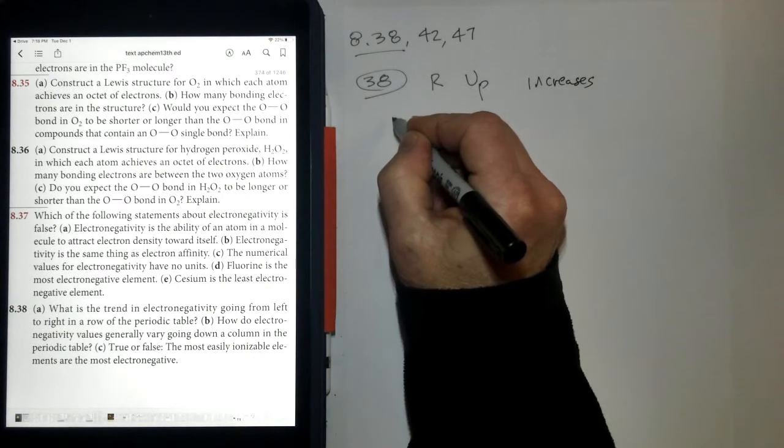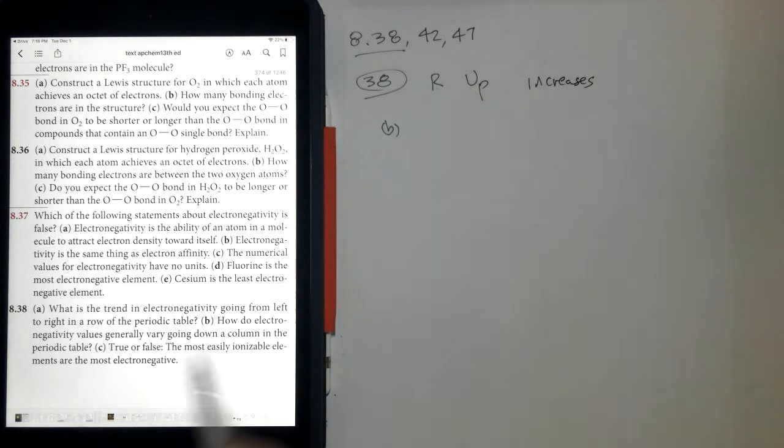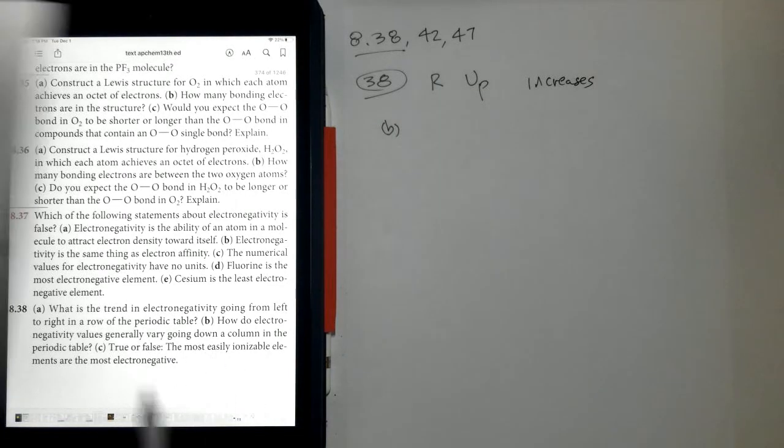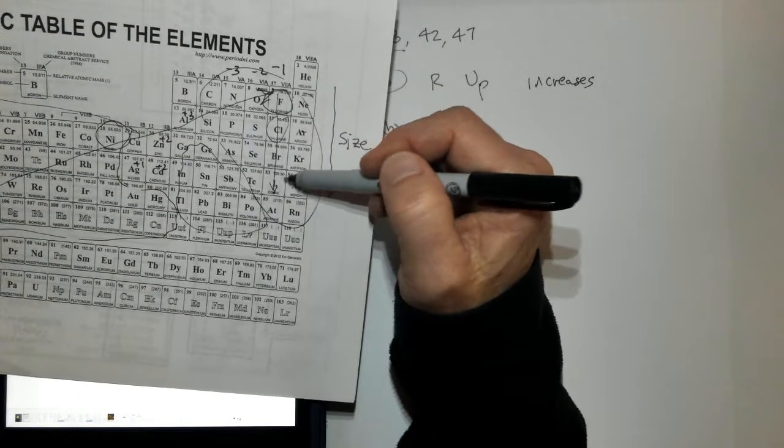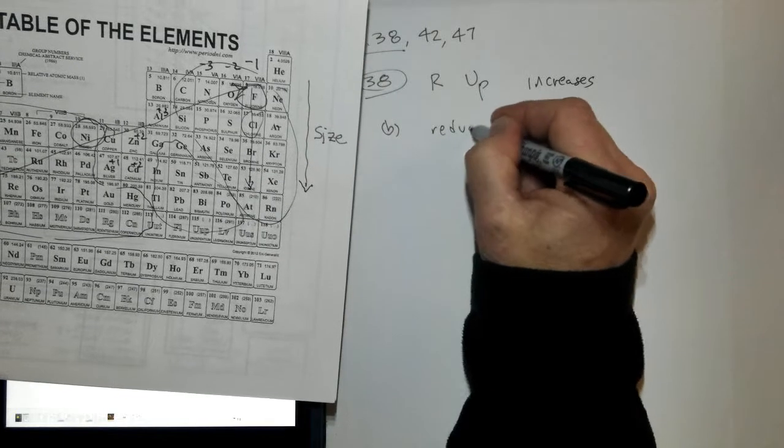Letter B: How do electronegativity values generally vary going down a column on the periodic table? As you go down a group or down a family, they get less, so they reduce or get smaller.